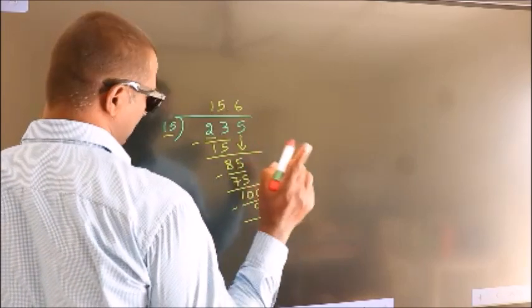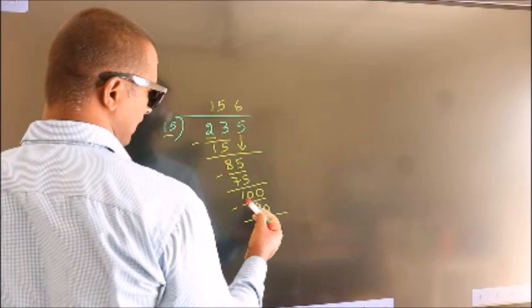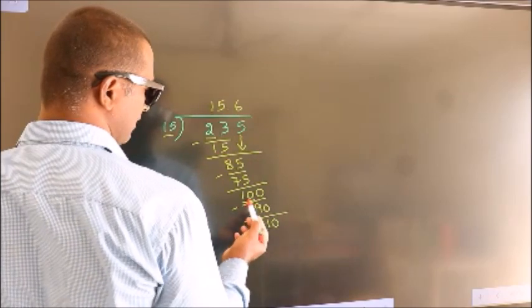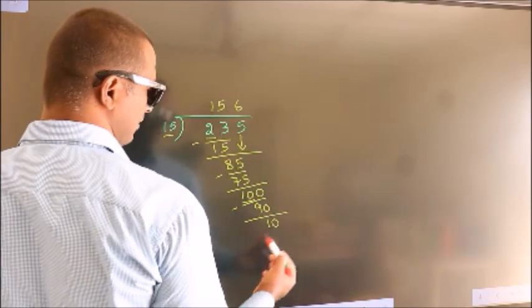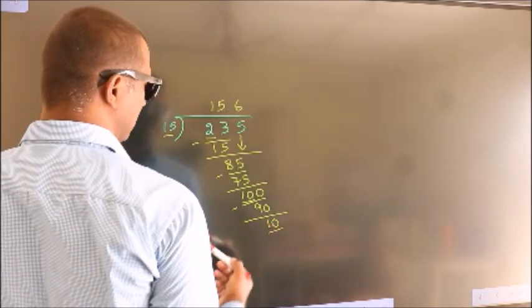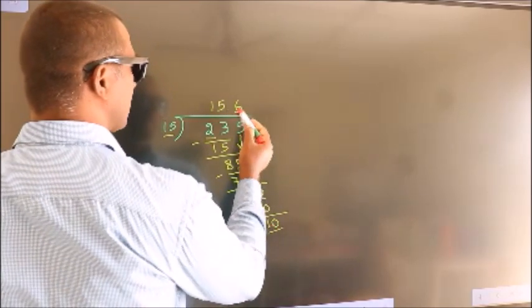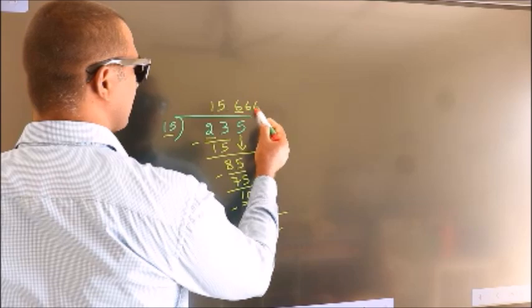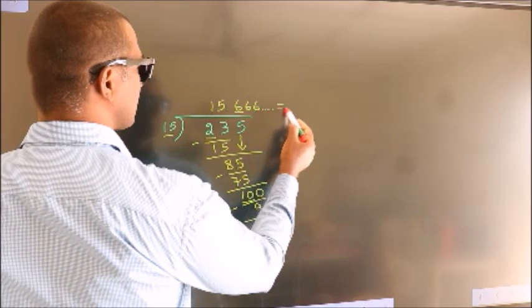Now you observe. Here we had 10, and we got 10 again. That means this number keep on repeating. So this is our quotient.